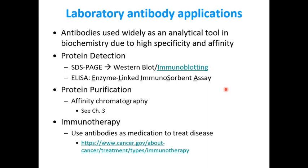Antibodies are also used in protein purification, with affinity chromatography as a classic example. As discussed in Chapter 3, affinity chromatography works by the principle of a protein's affinity for a solid matrix. In this application, an antibody is immobilized on the column matrix; the protein of interest has an epitope recognized by this antibody and is selectively trapped, while other proteins wash away — allowing the protein of interest to be purified from a mixture.